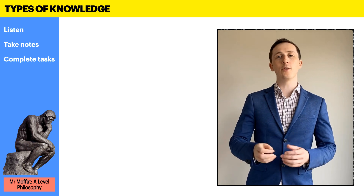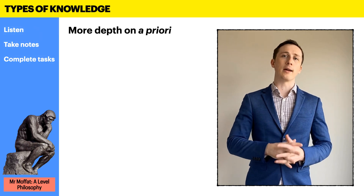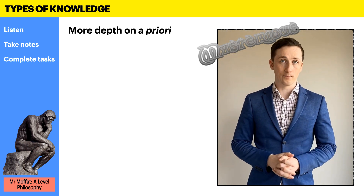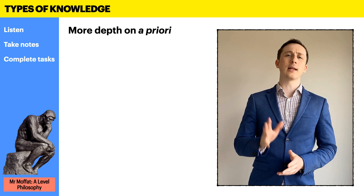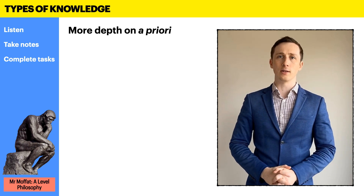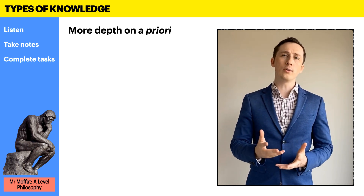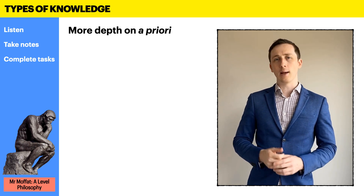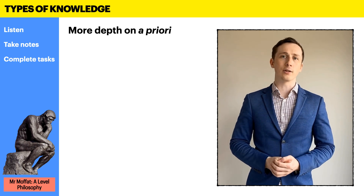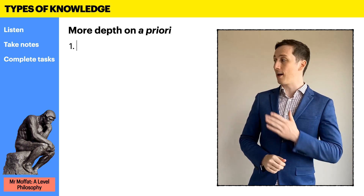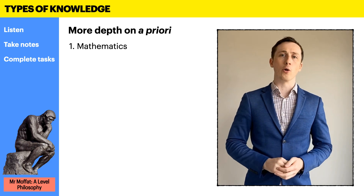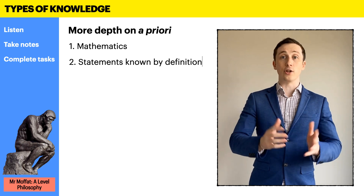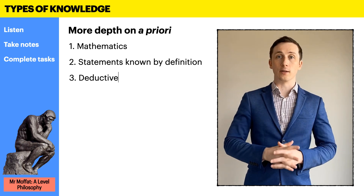Before we have a go at some tasks, I want to give you a bit more depth on a priori knowledge in particular, because I think of the two it's the more mysterious one. We've already given an example of mathematics, and that's a great example to get your head around — something we can know just from reason. But it's not the only example. I'm going to give you three main categories of a priori knowledge: first, mathematics; second, statements that we know to be true or false by definition; and third, deductive arguments.